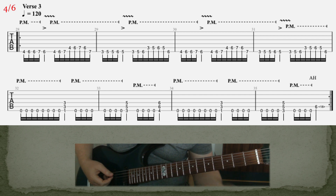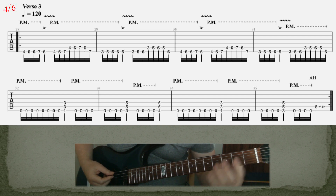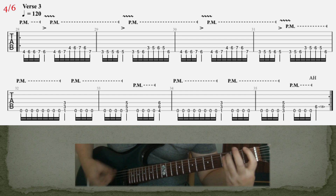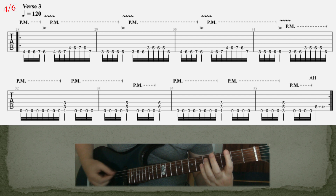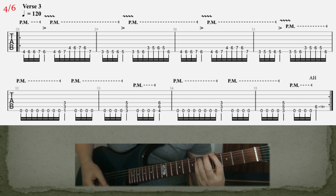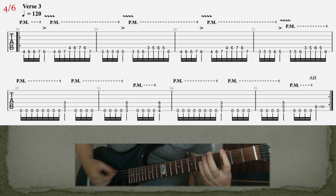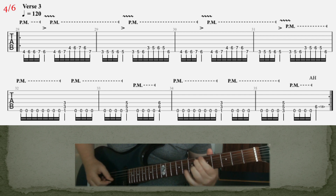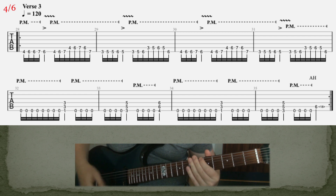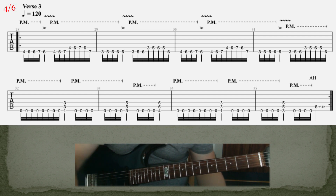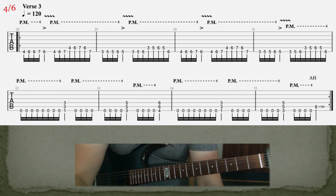Bar number three and four are the same as one and two. Then in the second line, there's a little bit of symphony on the sixth fret on A. That's the third verse - however we wanna call it, let's continue.